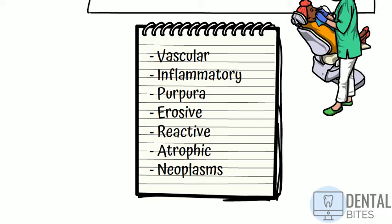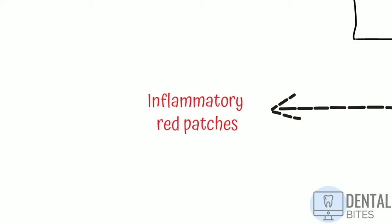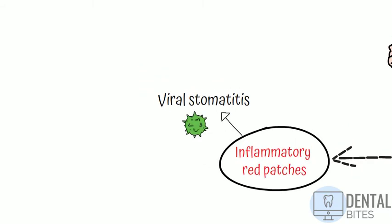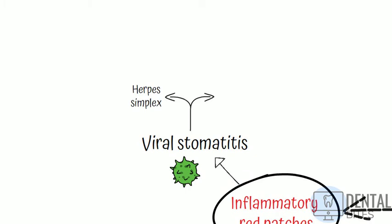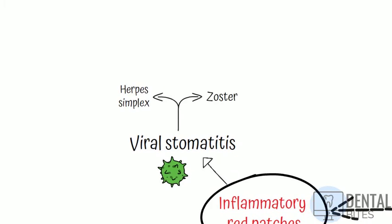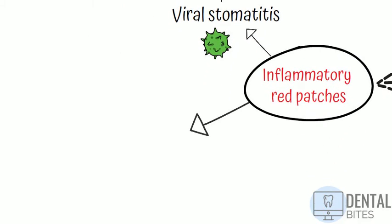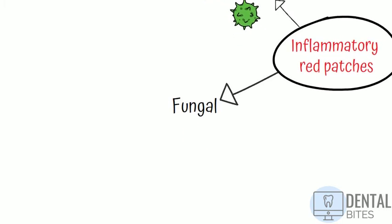We'll talk about vascular causes for red lesions, inflammatory causes, purpura, erosive, reactive, atrophic and neoplastic types. We'll start with the inflammatory types of red patches, which are typically the most common type that you'll see. They can be viral — stomatitis here just means inflammation of the mucous membranes of the mouth. Some examples would be those caused by herpes simplex virus, which can give the classical cold sores on the lips, and herpes zoster. You can also get red inflammatory patches caused by fungal infection, for example candida, and you might see something like this in an asthmatic patient using a steroid inhaler who doesn't rinse their mouth out afterwards.